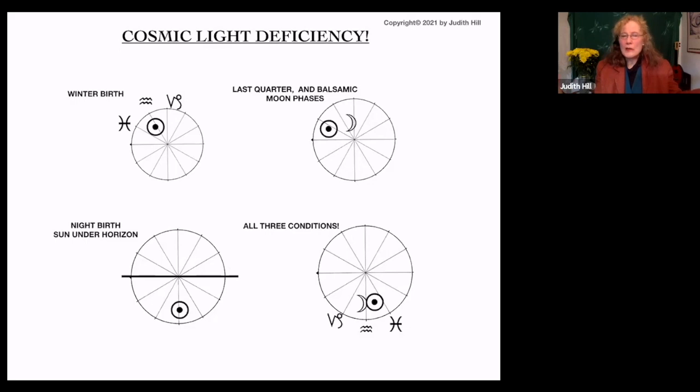Now if you're born in the winter, you look at that upper left hand corner. If you're born in the winter, you have less cosmic light. And in fact, these three signs are extremely prone to depression just being born in the winter.